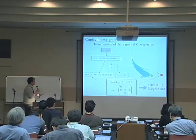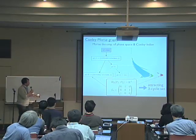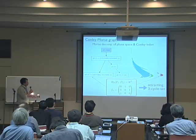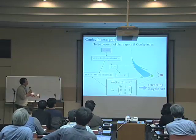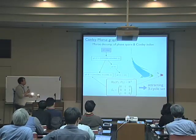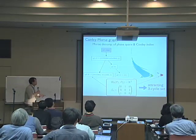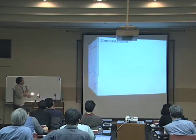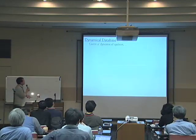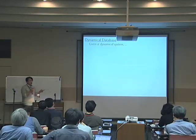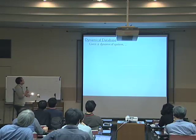So from this information, you can read some kind of dynamical information — these sets are something like an attracting three-cycle set, which looks like period-three periodic points. Now, the basic idea of the dynamical database is just to put all that information together into a database.